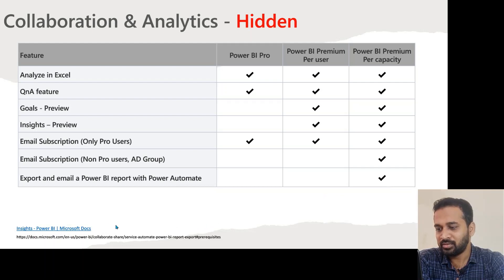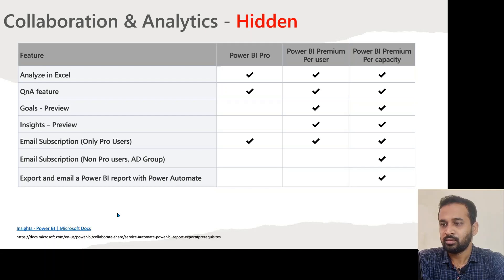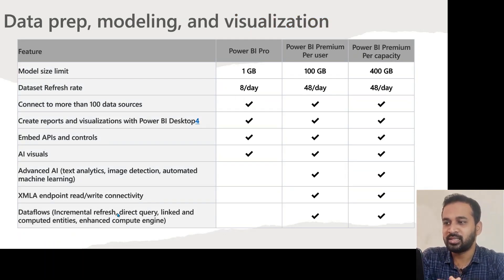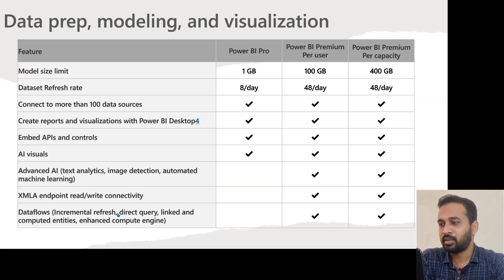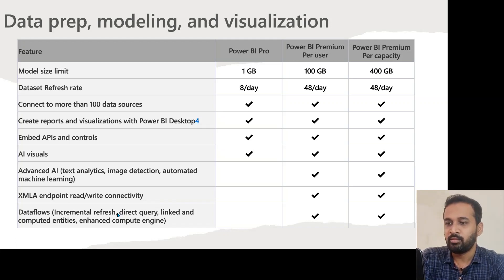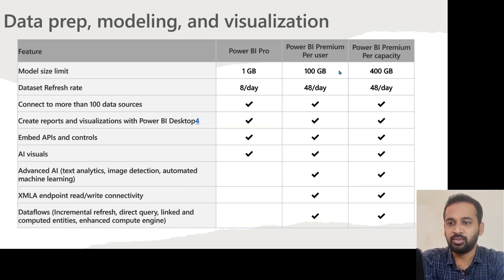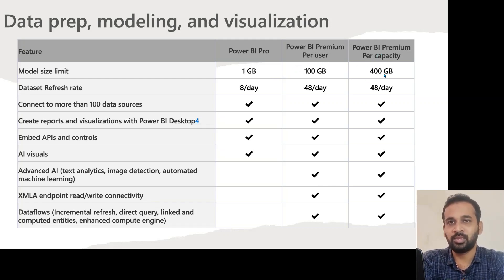There are a few links provided here if you want to go through them. Moving on to the next section: data preparation, modeling, and visualization. The model size for Pro is 1 GB per file, for Premium Per User it is 100 GB, and for Premium Per Capacity it is 400 GB per file.